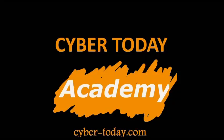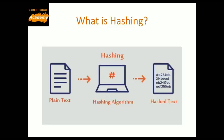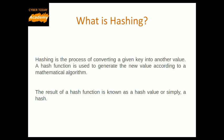Hello everyone. In this tutorial we will explain what we mean by data hashing and some of its algorithms. So what is hashing? Hashing is the process of converting a given key into another value. A hash function is used to generate the new value according to a mathematical algorithm. The result of a hash function is known as a hash value, or simply a hash.